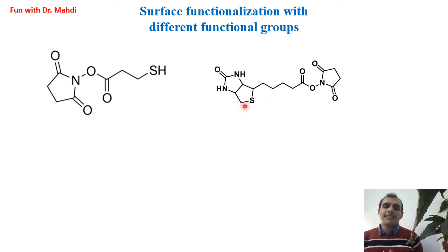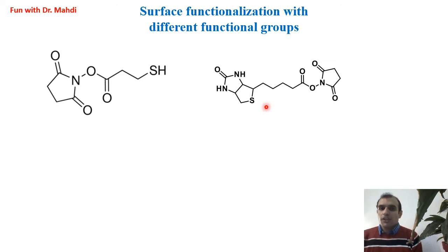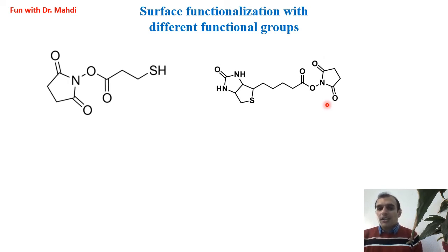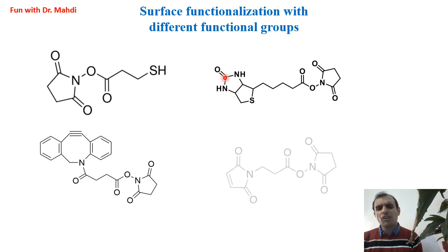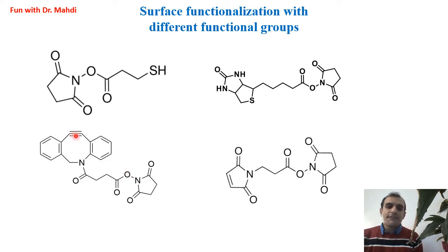Sometimes we would like to cover the surface with a vitamin. Here you can see vitamin B7, or biotin. Sometimes we would like to cover the surface with biotin. Again, in this case, we can use NHS ester-amine reaction. After the reaction, we will have biotin on the surface. Sometimes we would like to do click reaction on the surface — we can use NHS ester-amine reaction to cover the surface with alkyne or maleimide.